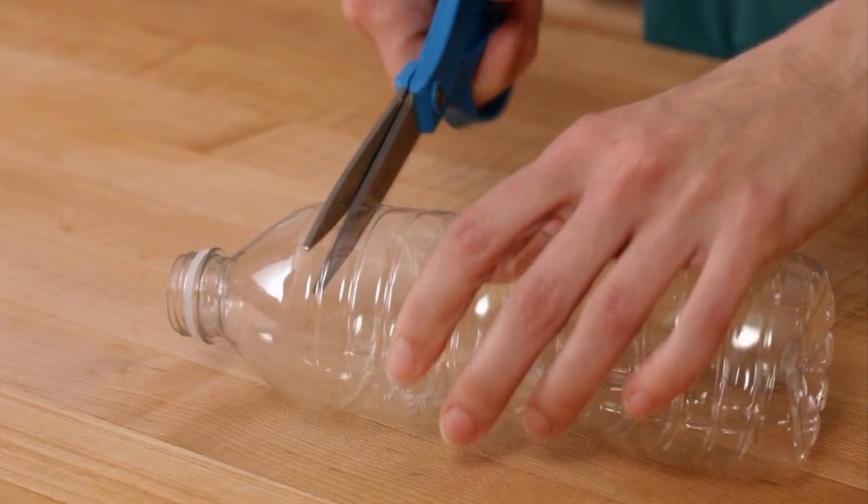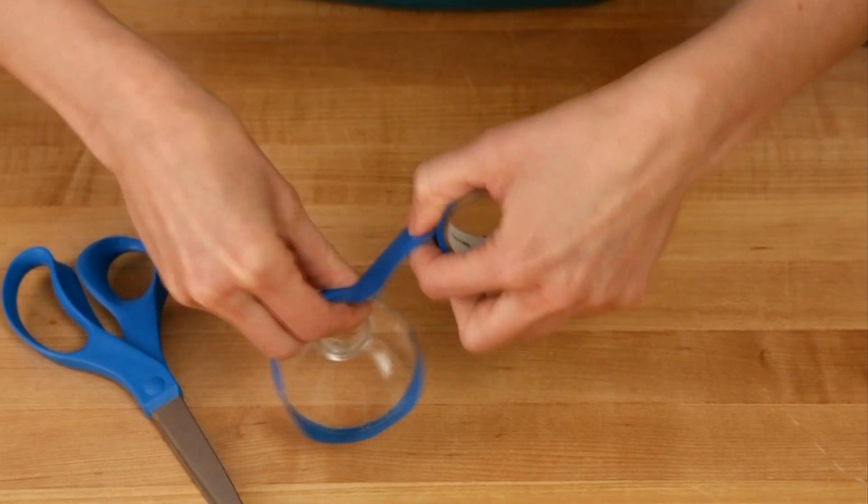First, cut the top from the bottle and discard the rest. Cover the edge with colored tape.